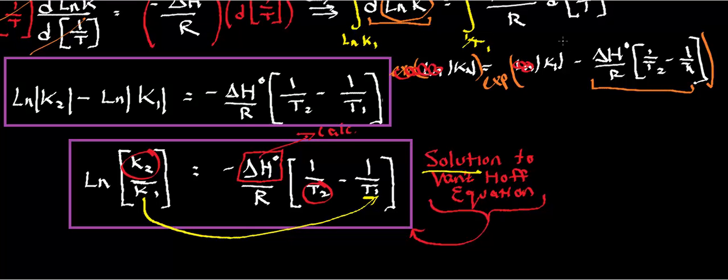So what I'm left with is k2 is equal to, and what I'm actually going to get is k1 times the exponential of negative delta H standard over R times the 1 over t2 minus 1 over t1. So k1 actually is going to get multiplied by all of this.